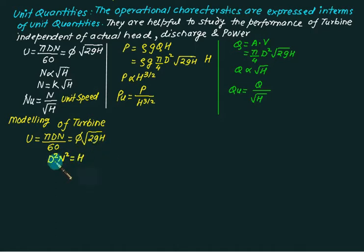So we have d into n is equal to proportional to root h or d square n square is proportional to root h. So for model and prototype this ratio must be fixed. This is called as head coefficient. And therefore for head coefficient the value ratio of h by d square by n square for model and prototype are identical.